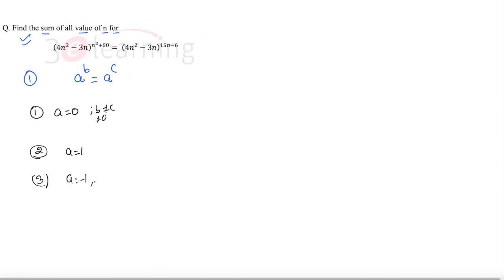Case 3: we have a = -1, at the same time b and c should be even numbers or b and c should be odd numbers. This is the third case.